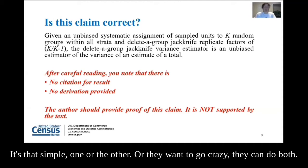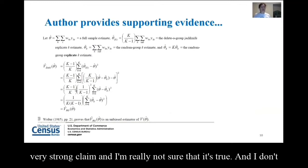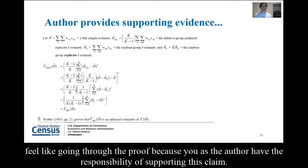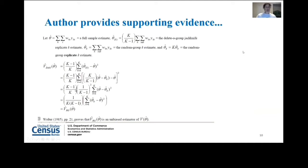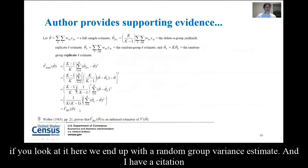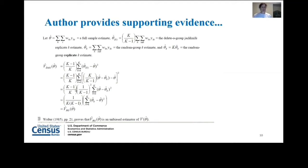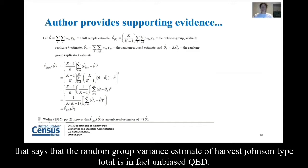So you call the author and say: I'm really sorry, but this is a very strong claim and I'm not sure it's true. You as the author have the responsibility of supporting this claim. The author then provides their equations and does the derivation, finishing with: if you look at it here, we end up with a random group variance estimate. And they have a citation that says the random group variance estimate of the Horvitz-Thompson type total is in fact unbiased. QED.